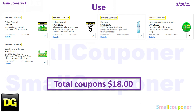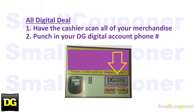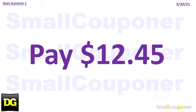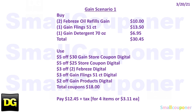So your total coupons is $18. Since these are all digital deals, you'll have to first scan all your merchandise, then punch in your DG Digital account phone number. That's the way that has been working out for me, but some of you may prefer to put it in while they are scanning — if that works for you, you can do that as well. You'll pay $12.45. Here is the written breakdown, so I'll give you a couple seconds to take a screenshot of this.